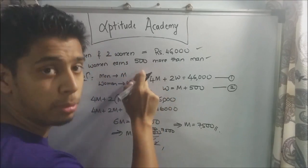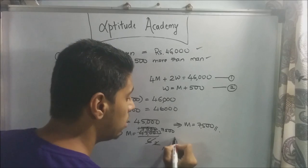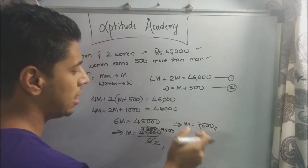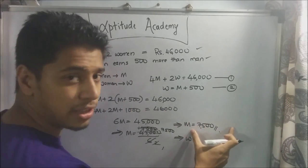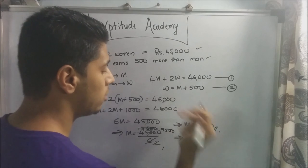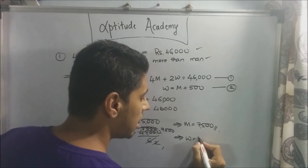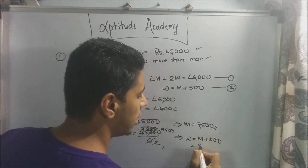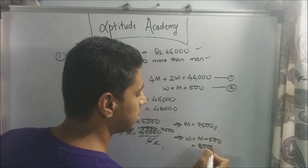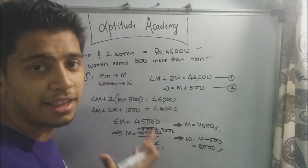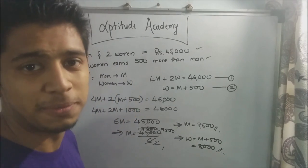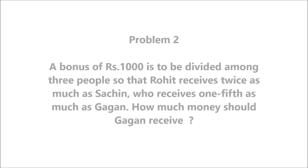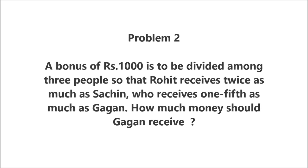The woman earns 500 rupees more than the man. The man earns 7,500, so the woman earns m + 500 = 8,000 rupees. Let's go to Problem 2.